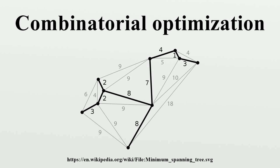The goal is to find the best solution. Some common problems involving combinatorial optimization are the traveling salesman problem and the minimum spanning tree problem. Combinatorial optimization is a subset of mathematical optimization that is related to operations research, algorithm theory, and computational complexity theory.